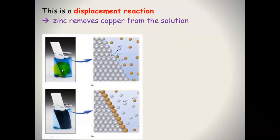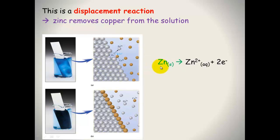Here we have the piece of zinc put into the solution. You can see that the zinc gives up its electrons and moves into solution — it becomes aqueous. The equation is: zinc solid forms Zn²⁺ ions (aqueous) plus two electrons. Since electrons are being produced, or lost, this is the oxidation half equation.